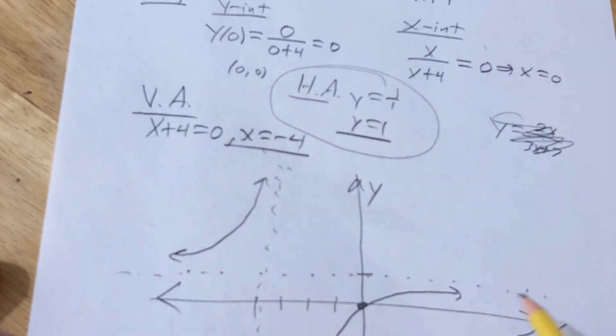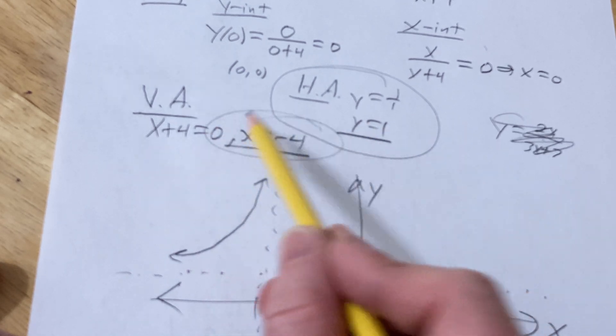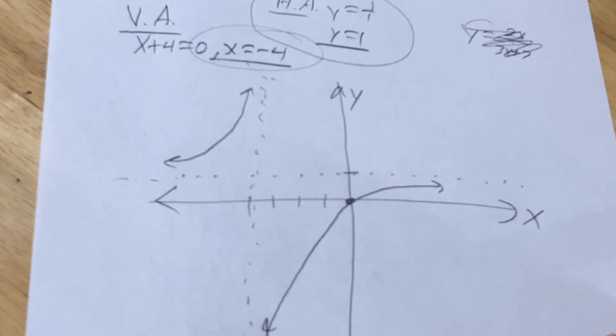We found the horizontal asymptote, which is 1, the vertical asymptote, which is negative 4. I hope this video has been helpful. Good luck.